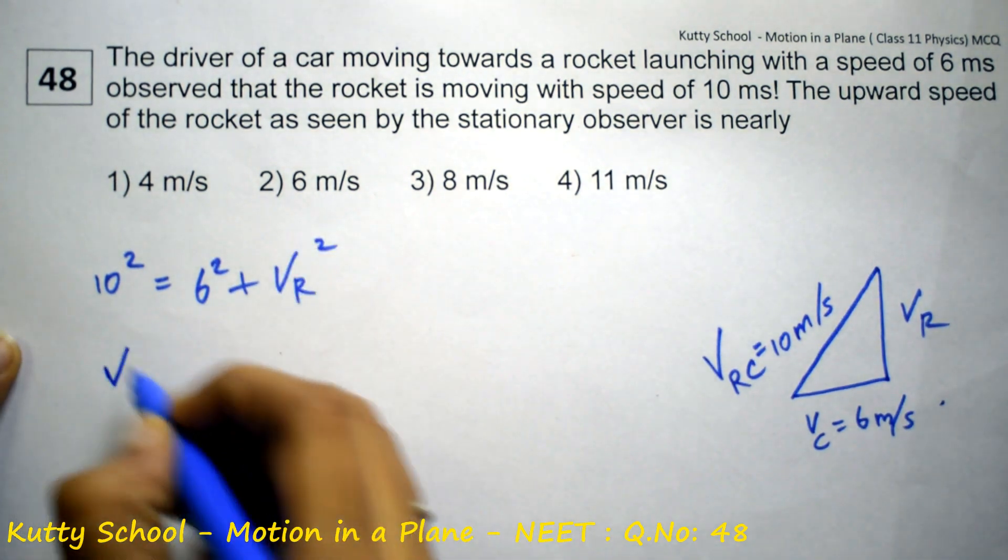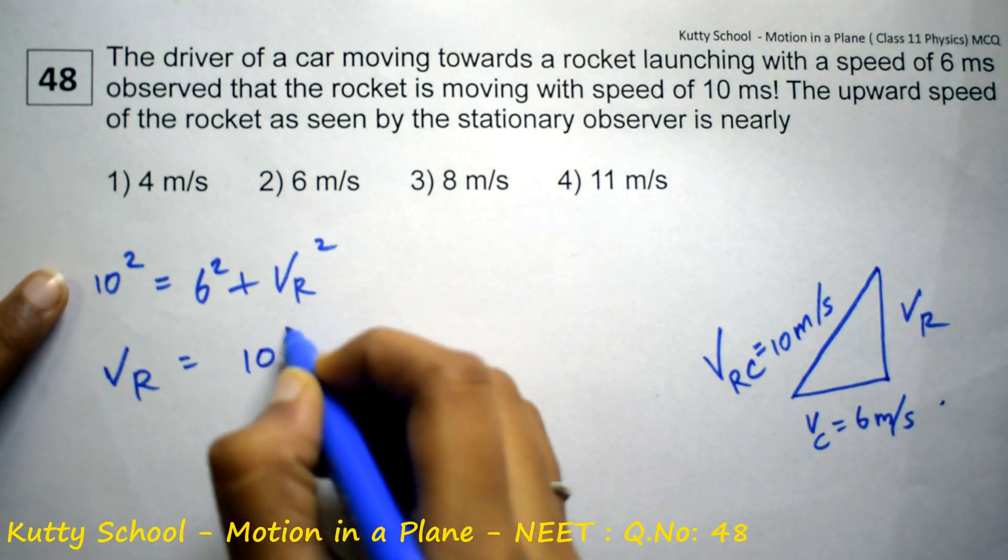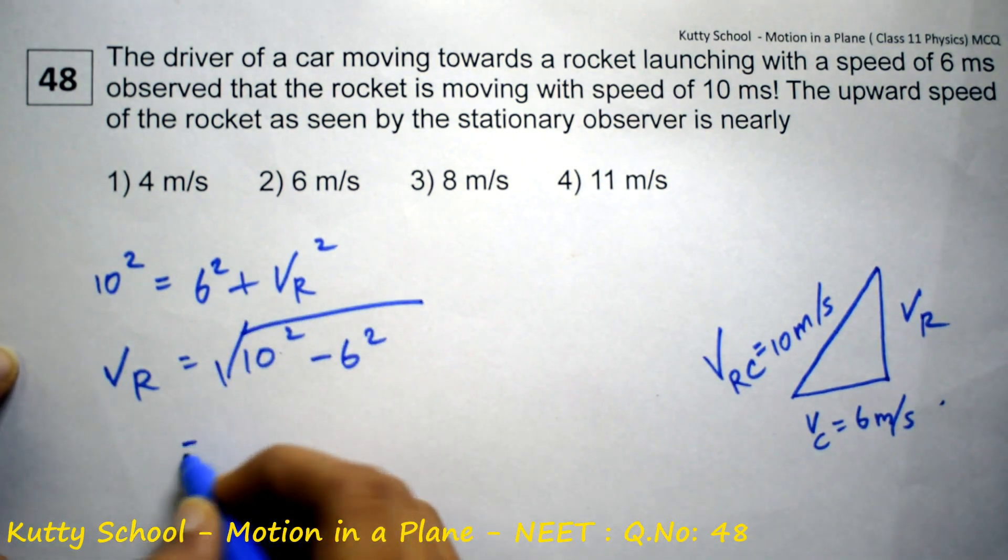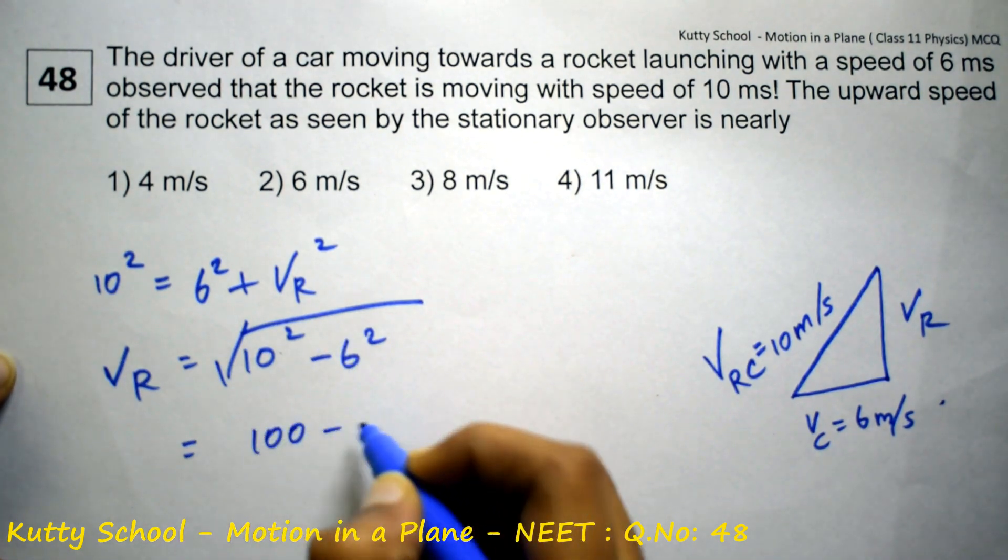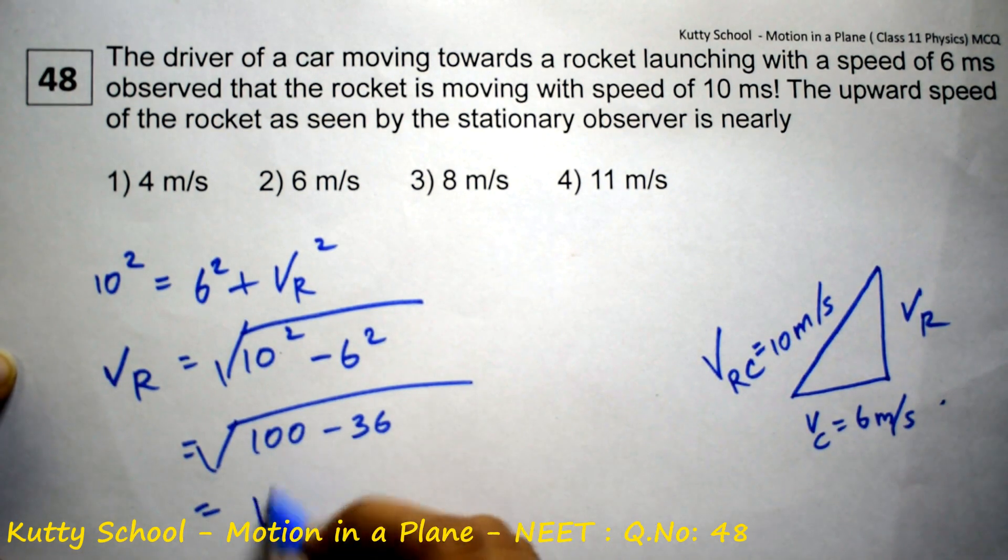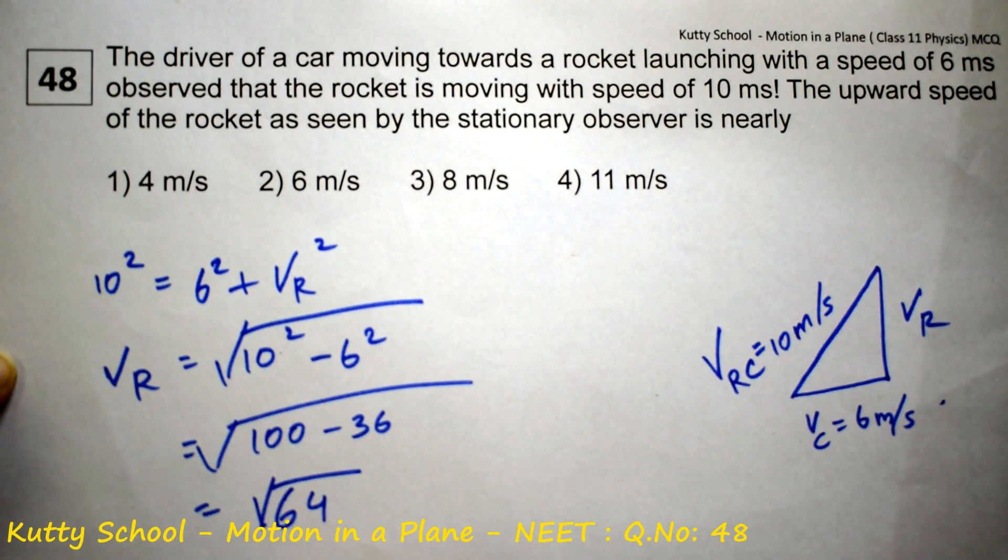Velocity of rocket is equal to square root of 10 square minus 6 square. It is equal to square root of 100 minus 36, equals square root of 64. Velocity of rocket is equal to 8 meters per second.